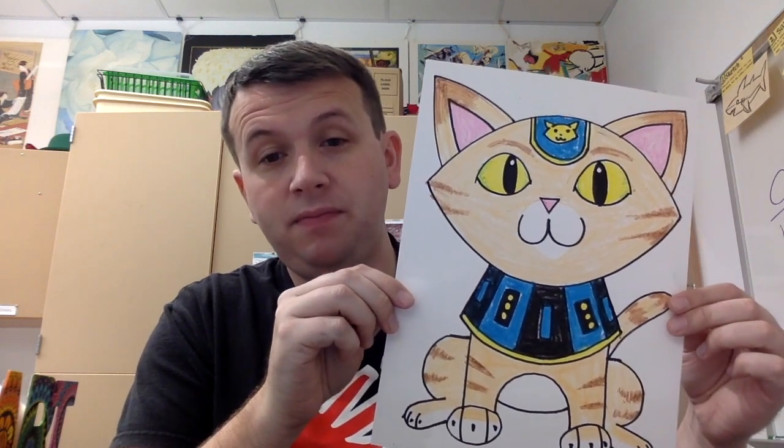All right friends, welcome back to Art Class with Mr. Poulis. Today we are going to be making some Egyptian art, specifically an Egyptian cat. The ancient Egyptians found cats to be magical creatures and they were treated like royalty sometimes. They were even given their own jewelry and when they died they were mummified and buried with their owners. Pretty cool to be a cat in ancient Egypt. So let's get started.